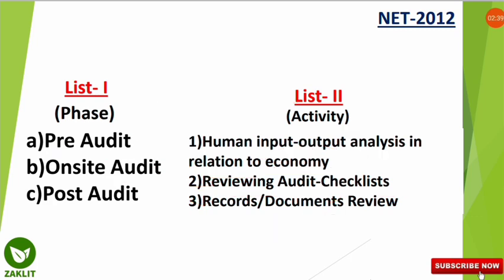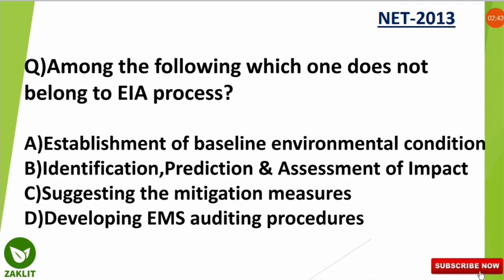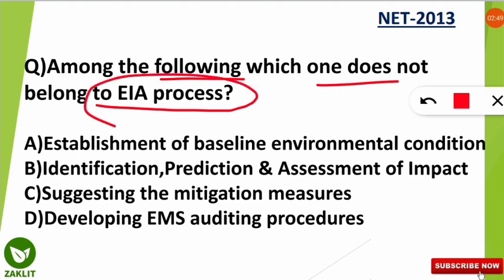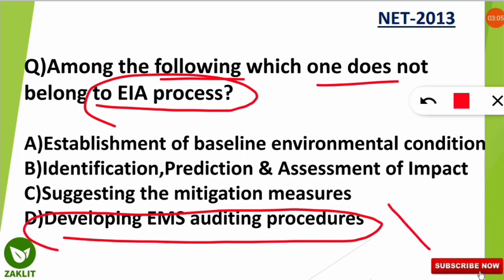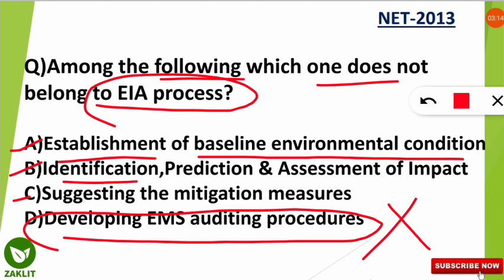The next question is from EIA: among the following, which one does NOT belong to the EIA process? The correct answer is 'developing an environmental management system ordering procedure' — this does not belong to the EIA process. The three things that DO belong to EIA are: establishment of baseline environmental conditions, identification, prediction and assessment of the impact of a project, and suggesting mitigation measures.